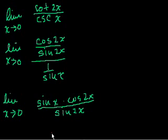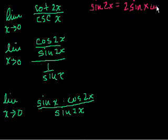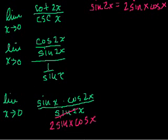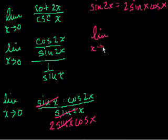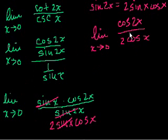This is where you use the double angle formula: sine of 2x equals 2 sine of x cosine of x. Substituting that in, the denominator becomes 2 sine of x cosine of x. Since x is just approaching 0 and not equal to 0, we can divide numerator and denominator by sine of x. We're left with the limit as x approaches 0 of cosine of 2x over 2 cosine of x. Cosine of 0 is 1, so this equals 1 over 2 times 1, which is 1 half.